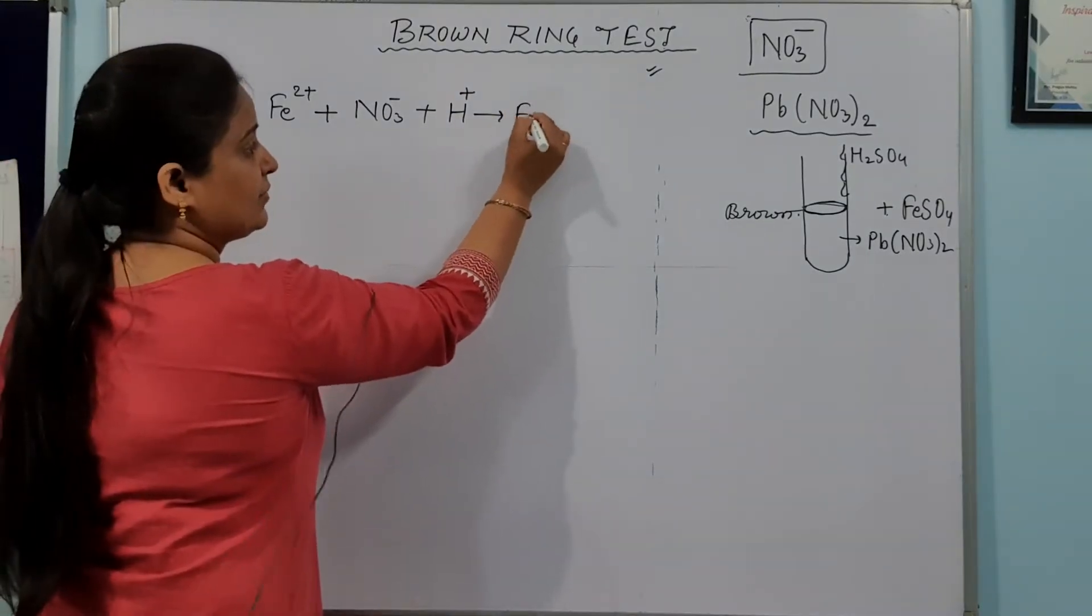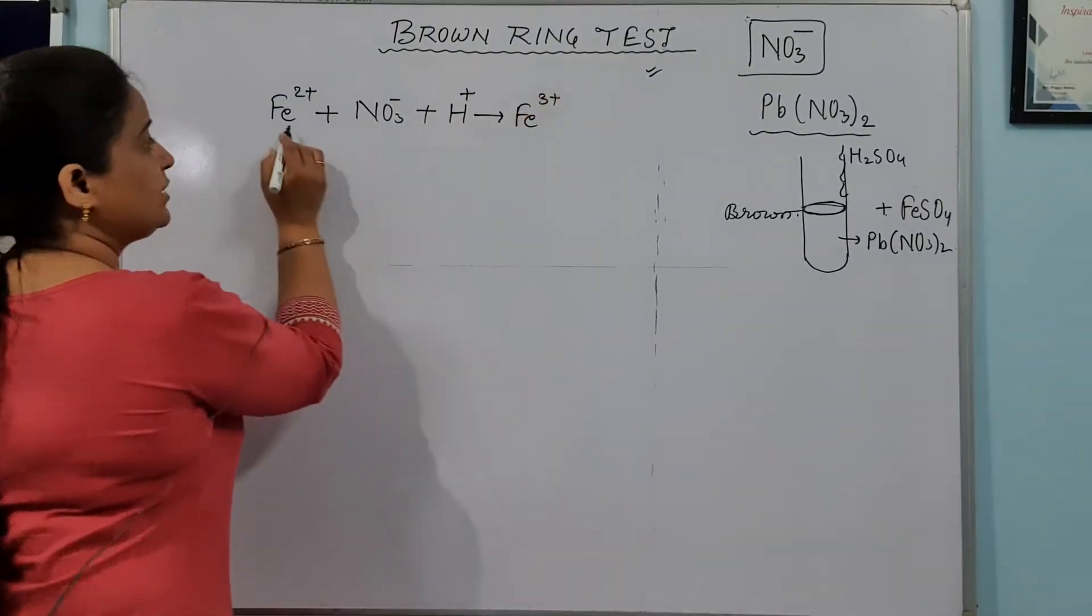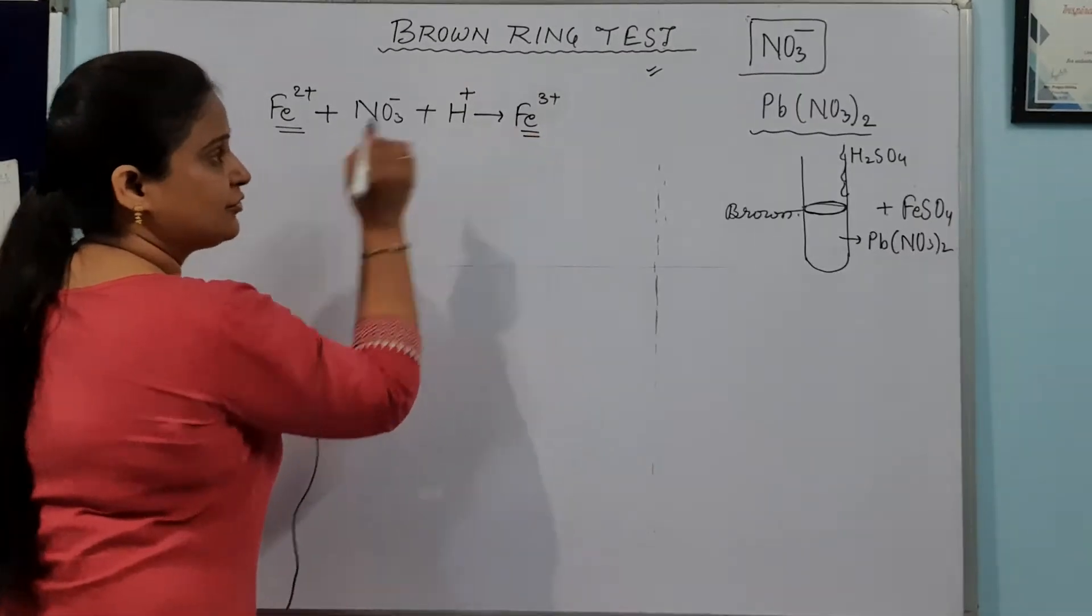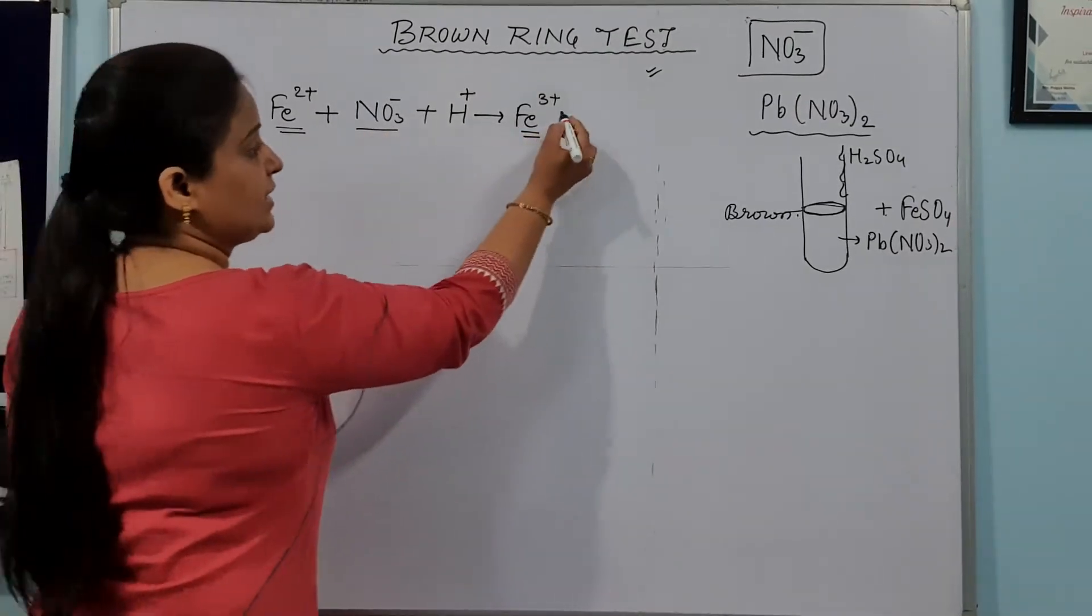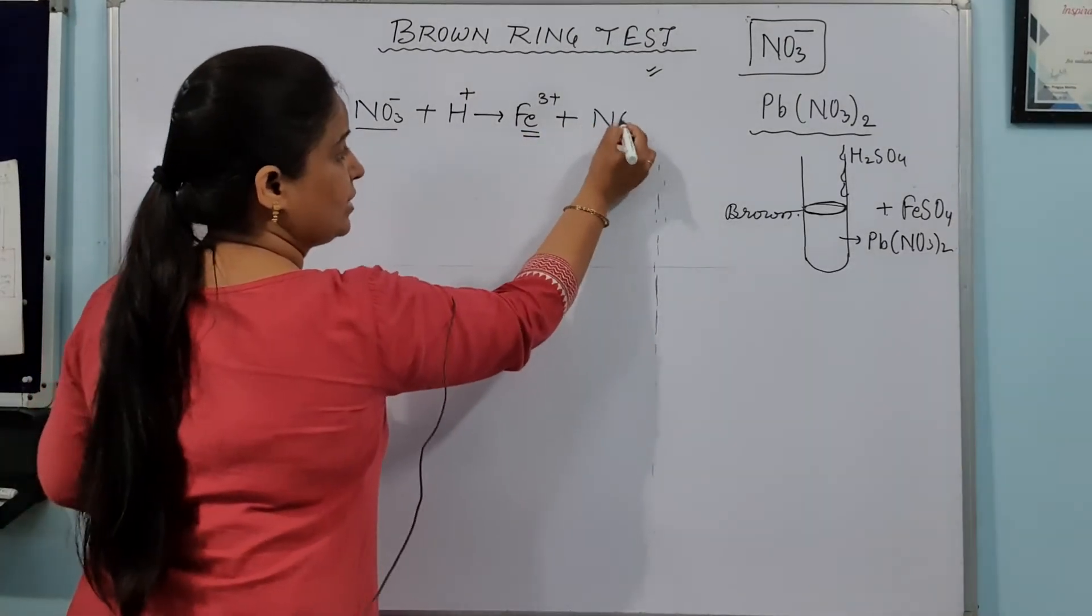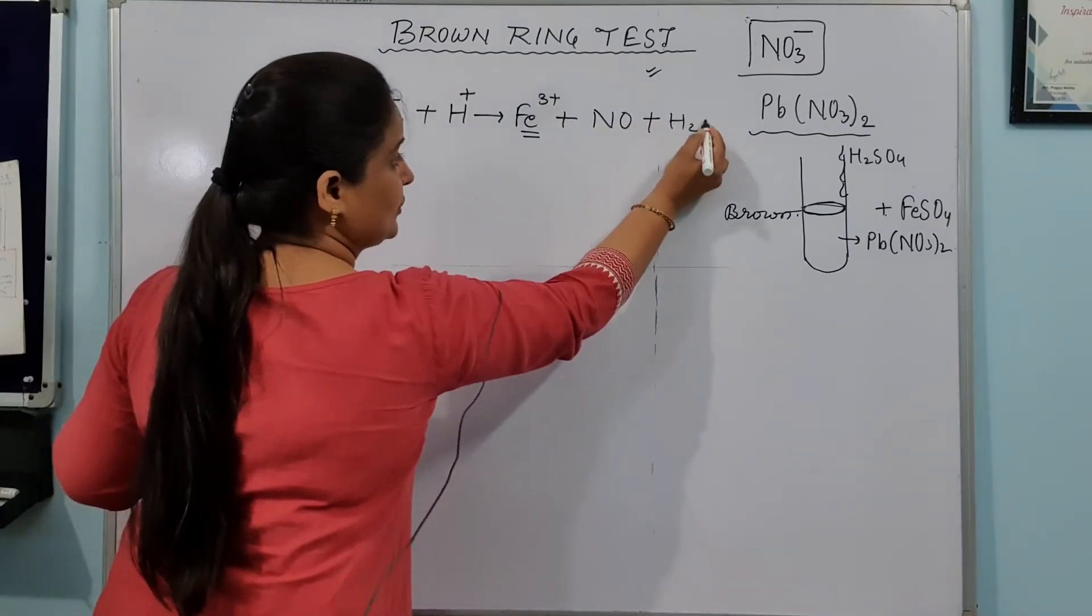When they react they form Fe3+. Your ferrous iron converts into ferric iron. And your nitrate ion converts into NO and H2O.